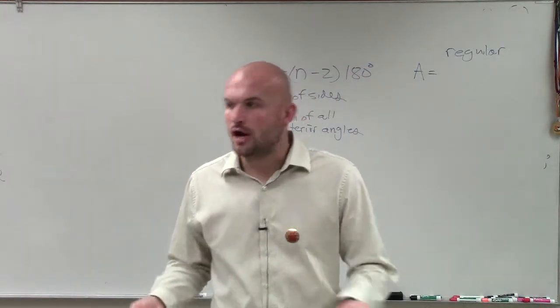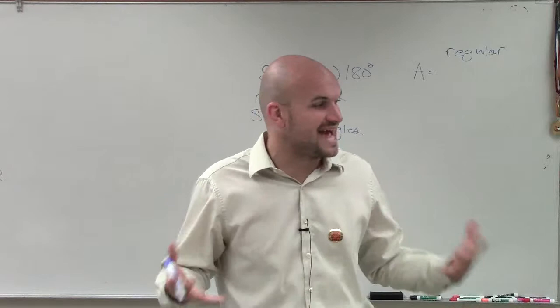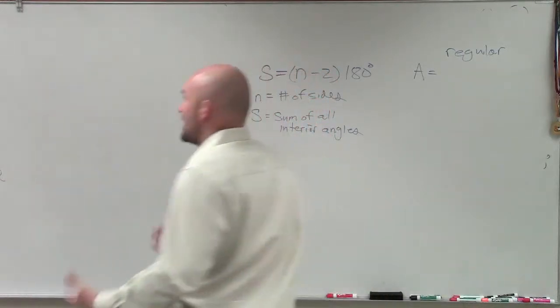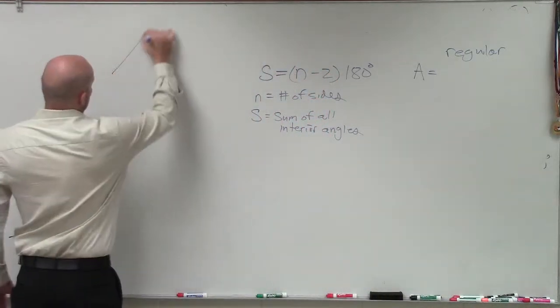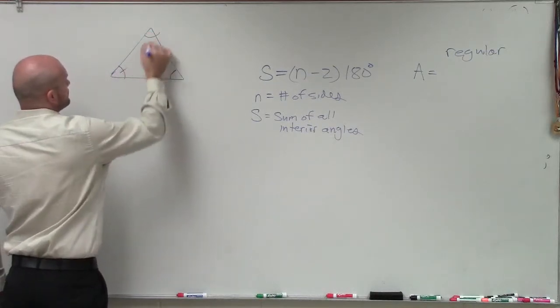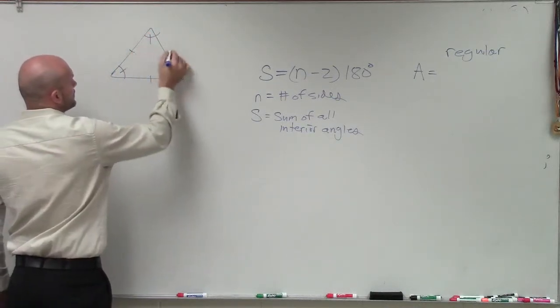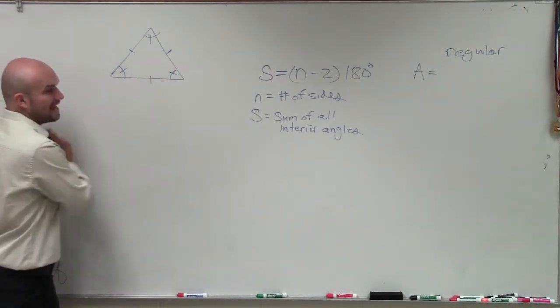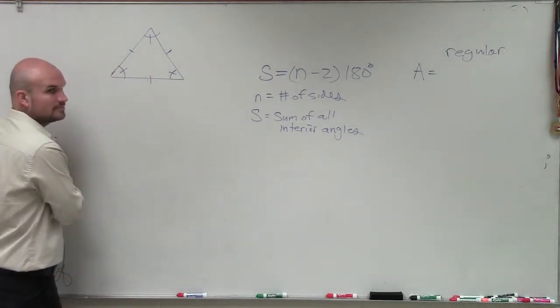Remember, regular are when we have polygons that have the exact same angles and side lengths. So let's go and talk about two of them here. This is a regular triangle, also known as an equilateral. All the sides are exactly the same, and the angles are exactly the same.